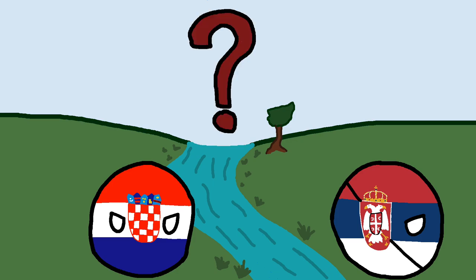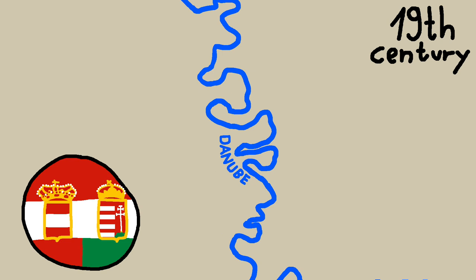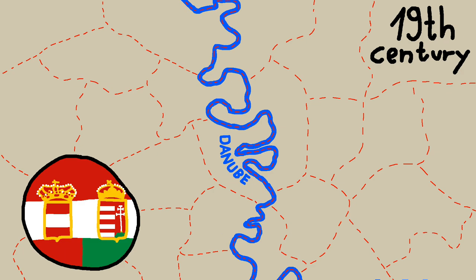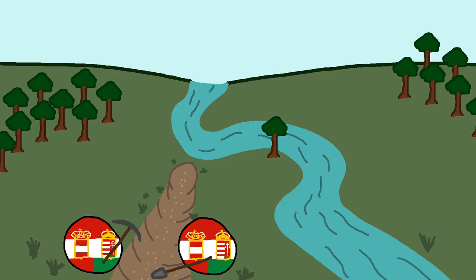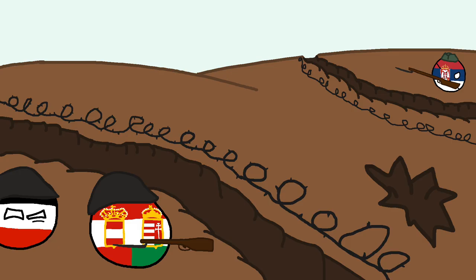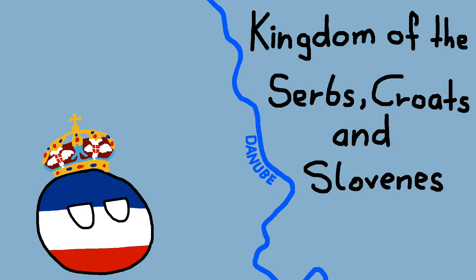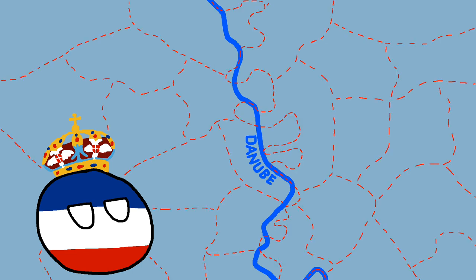But why are the claims so different? Throughout the 19th century, both sides of this part of the Danube were in the Austro-Hungarian empire, and they used the Danube as an internal border between municipalities. However, by the end of the 19th century the Austrians began to significantly change the course of the Danube to straighten it, but they did not change the borders of the municipalities to reflect this new course. One world war later, the area became part of the new Kingdom of Serbs, Croats and Slovenes — shortly after renamed to Yugoslavia — which simply kept the Austrian municipality borders in the region.